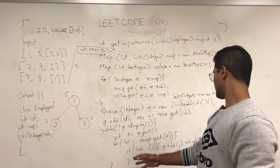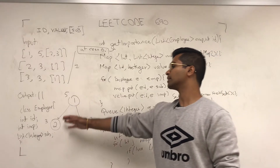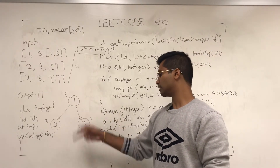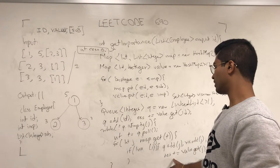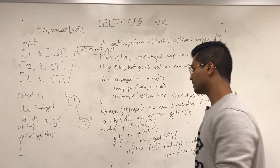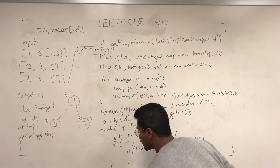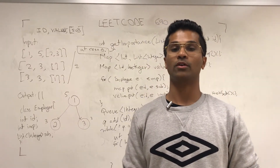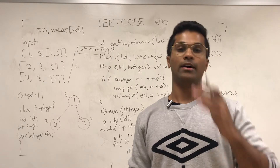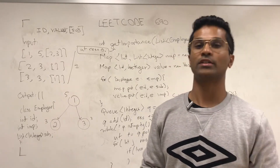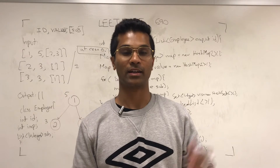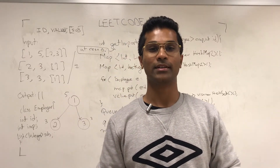What this ensures is that I'm not visiting any more employees than I need to. I get all the values that I need, increment res, and then I just have to return res. And that's pretty much how you solve LeetCode 690. If you made it through the video, congratulations and thank you. If you liked the video, please subscribe, like, and comment below on whatever you want to see.